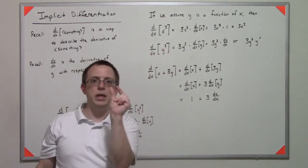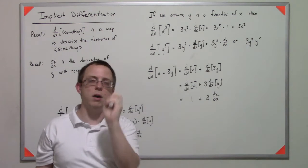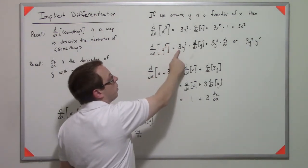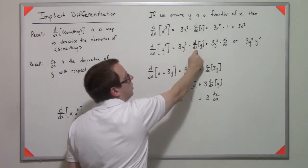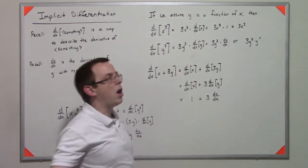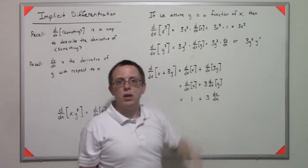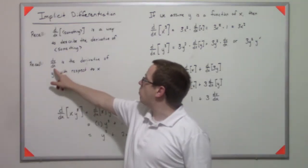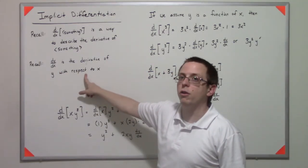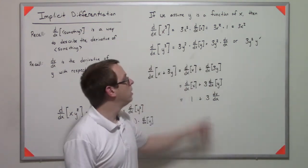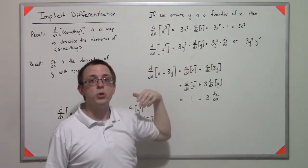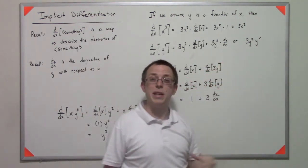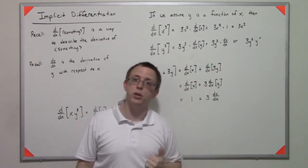We bring down three to the front, we subtract one, but we have this chained on d/dx of y. If we're going to use the convention that dy/dx is the derivative of y with respect to x, then we're going to rewrite that as dy/dx. You may also see that as 3y²y', that's very common in implicit differentiation notation just because it's very compact.